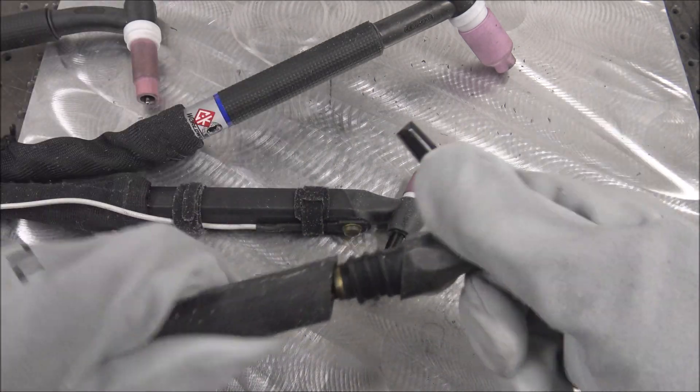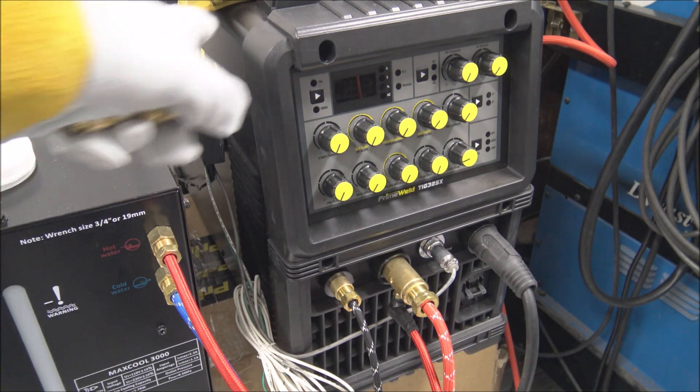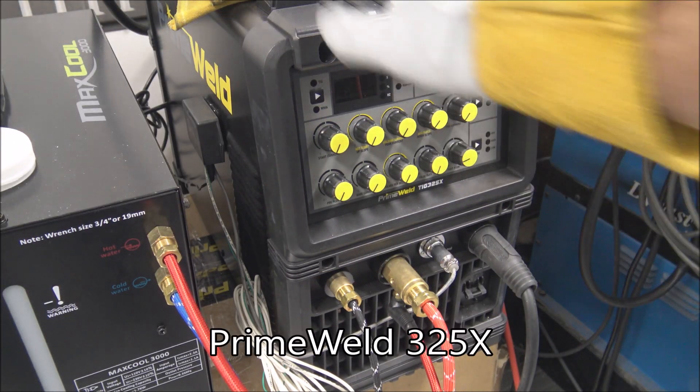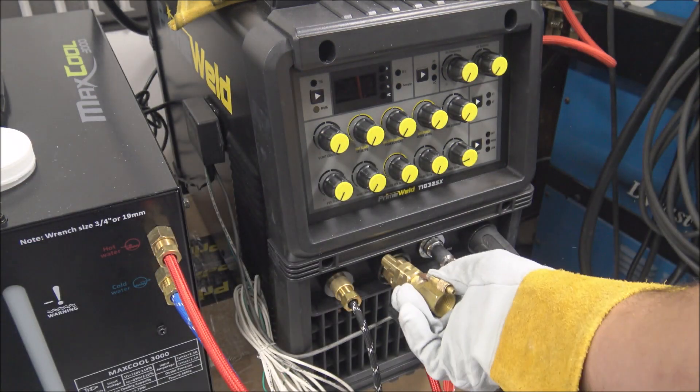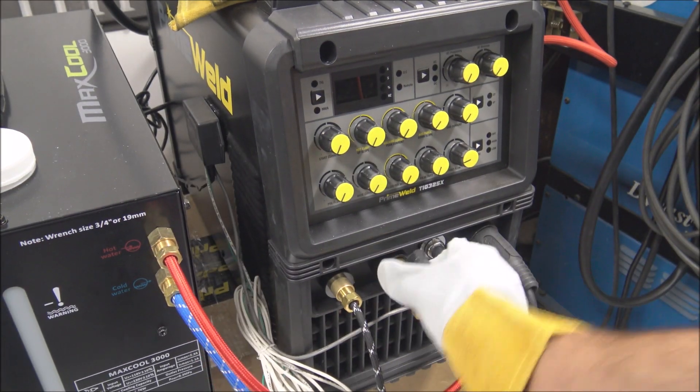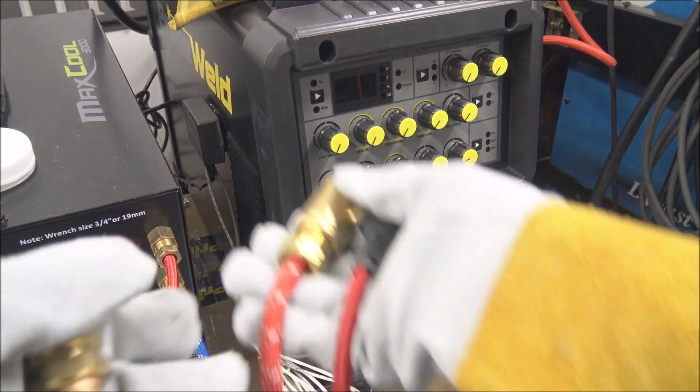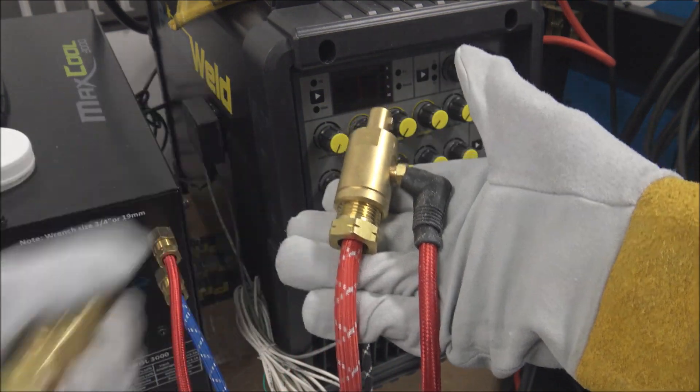I'll leave a link below for it. And to adapt this torch to the Prime Weld machine, which I really like - I'm going to be using it a lot more in upcoming videos - you have to get rid of this connector here and buy this one to get it to all work right. I'll leave a link below for this too.